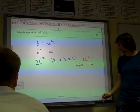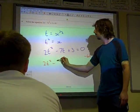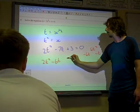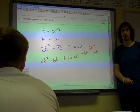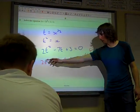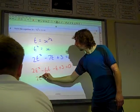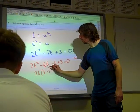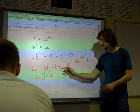So we write it out, we've got 2t squared minus 6t minus t plus 3 is 0. So, we factorise two terms at a time. The first two terms, we have a common factor of 2t, t minus 3.